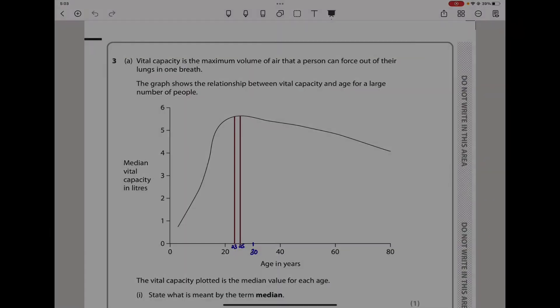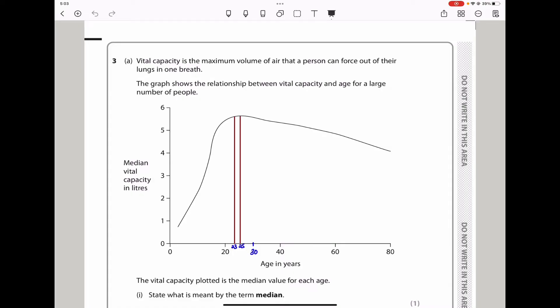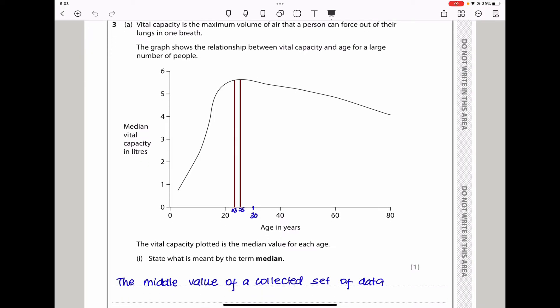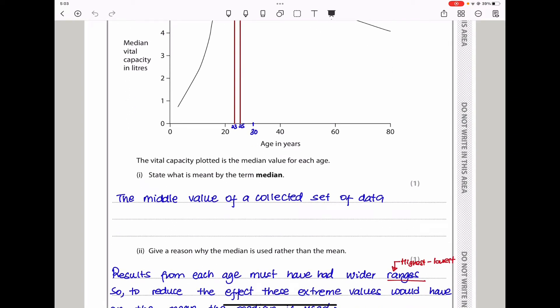Question three: Vital capacity is the maximum volume of air that a person can force out of their lungs in one breath. The graph shows the relationship between vital capacity and age for a large number of people. We can see the median vital capacity in liters and the age. Initially as the age increases, the median vital capacity increases until a specific age, becomes somehow constant, and then begins to decrease as age increases. State what is meant by the term median. The median is the middle value of a collected set of data. You have a collected set of data, the middle number as you arrange them in increasing order.